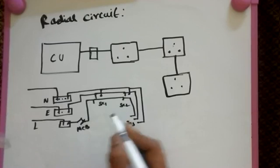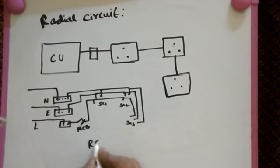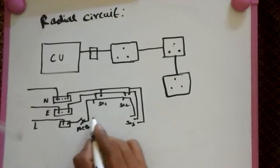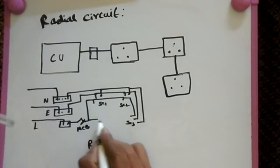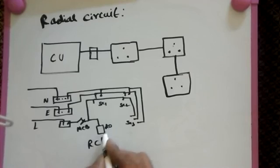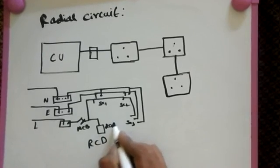In special cases, we use an RCD. RCD means residual current device. This is connected in parallel here - 20 ampere or whatever you need.